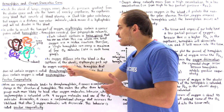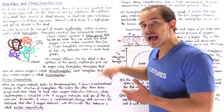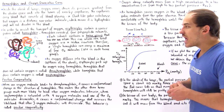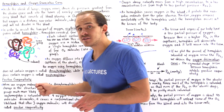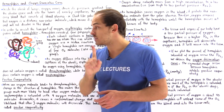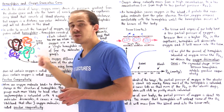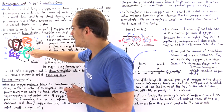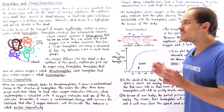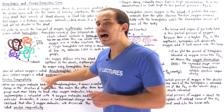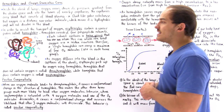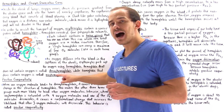As oxygen diffuses across the respiratory membrane from the alveoli and into the capillaries in the lungs, our red blood cells pick up the oxygen. Inside the red blood cells, hemoglobin picks up the oxygen, and a single hemoglobin can carry a maximum of 4 oxygen molecules — one in each of the 4 heme groups. When hemoglobin is fully saturated with oxygen, we call it oxyhemoglobin; when it carries no oxygen, we call it deoxyhemoglobin.